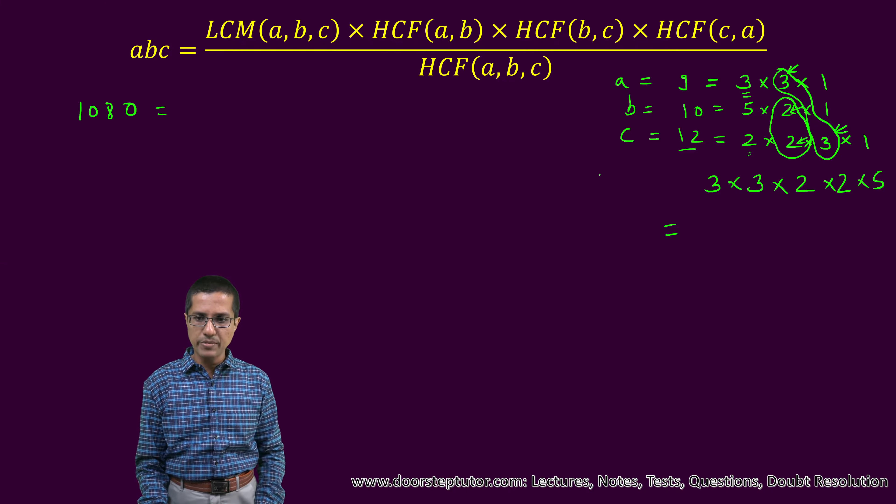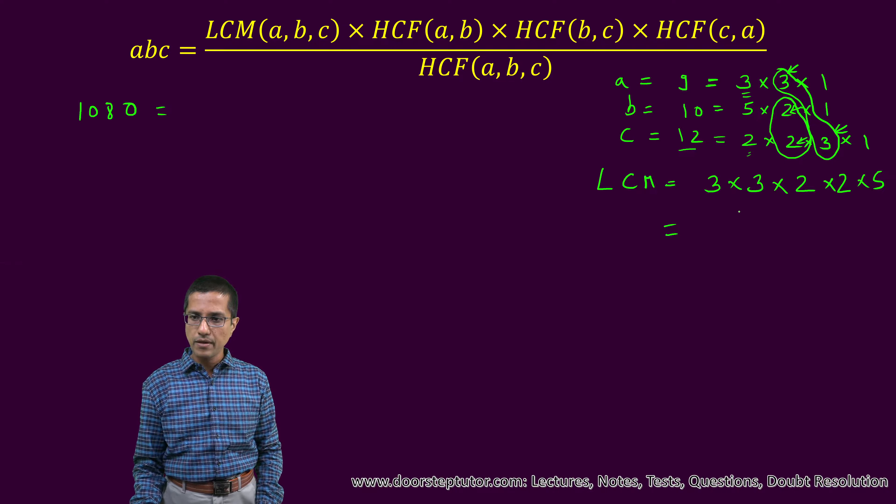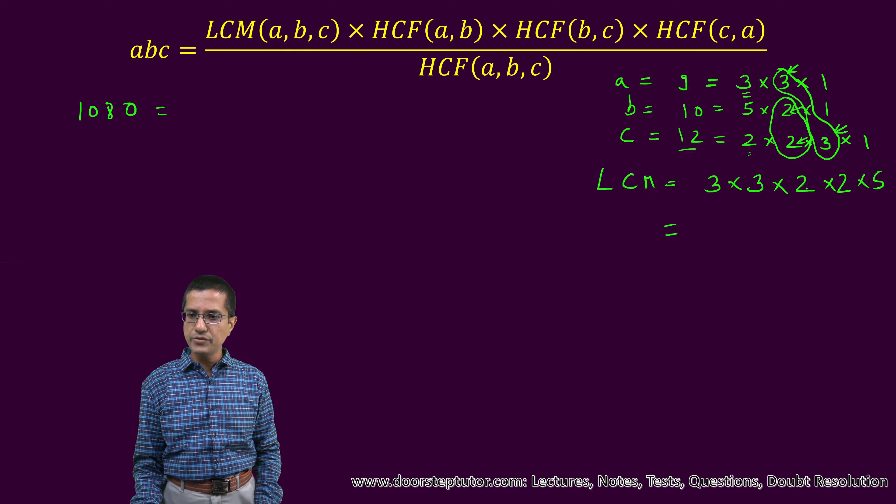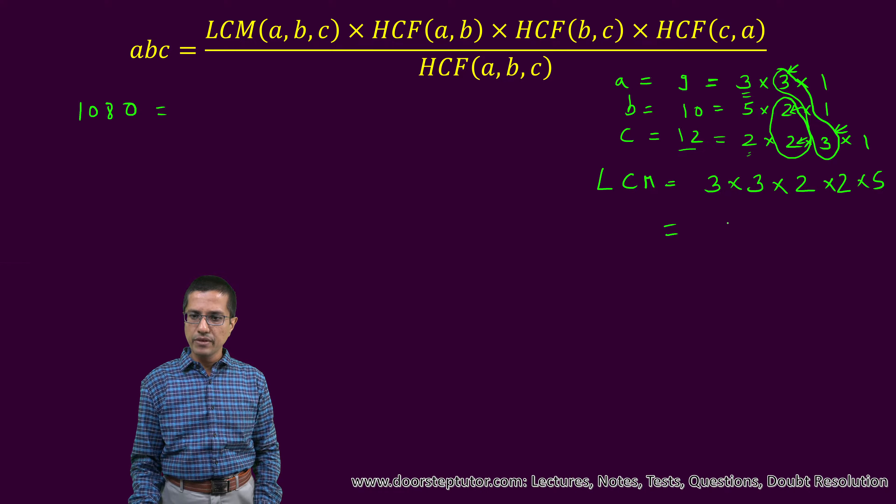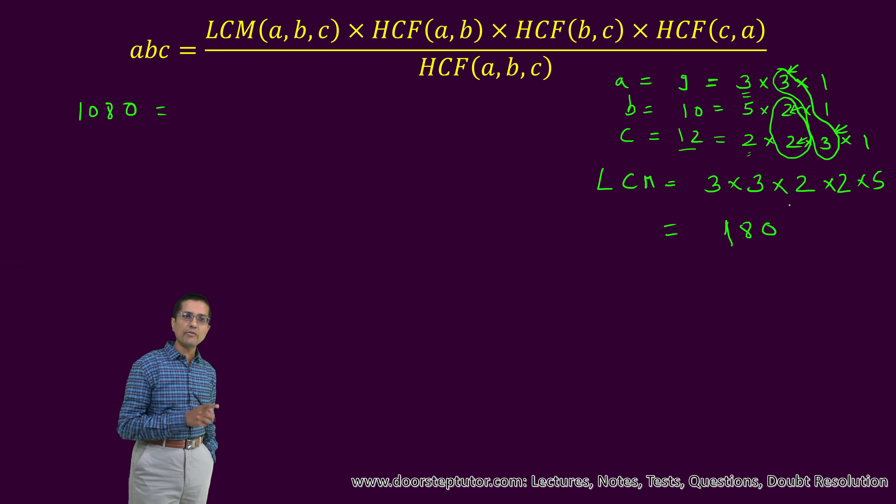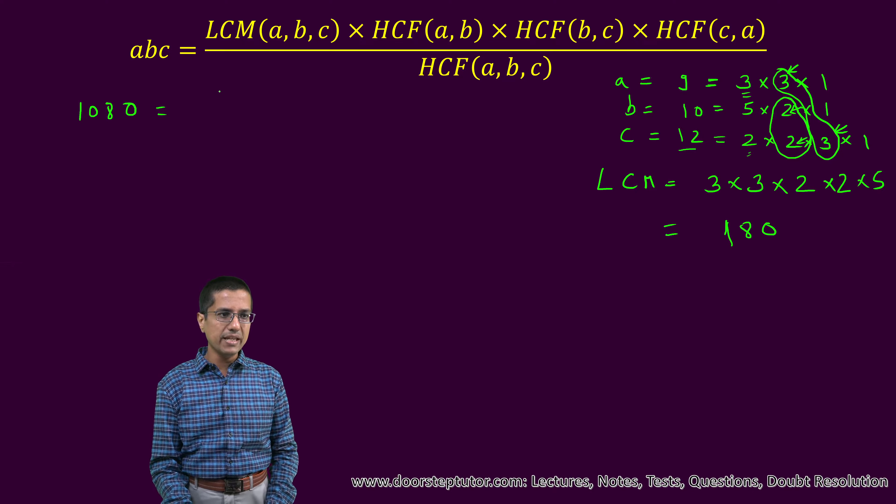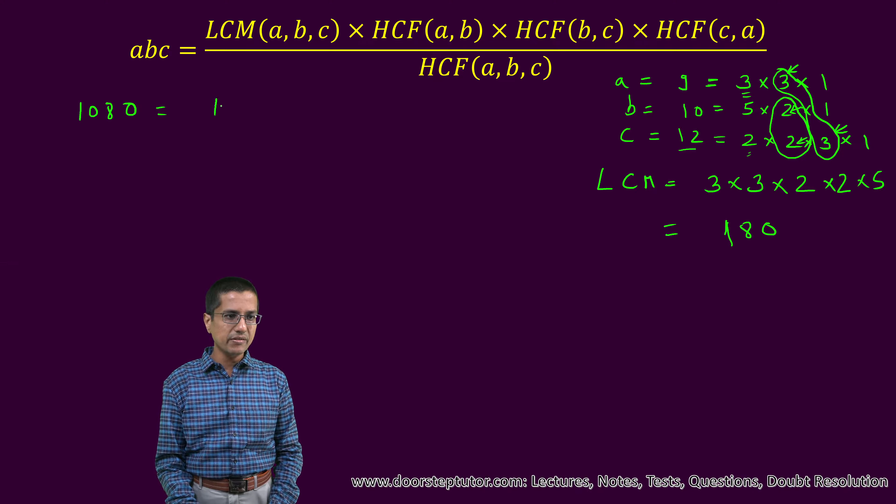Let us just write it to make it clear. So this is three threes and nine to the 18, 18 to the 36 and this becomes 180. Now we have found the LCM. Let us move on to the HCF. HCF of AB. So this LCM is 180.